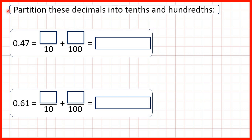We need to partition these decimals into tenths and hundredths, showing the partition as both fractions and decimals. So first we have 0.47. We know that the first digit after the decimal point tells us how many tenths we have, so that's four tenths. And then the second digit after the decimal point tells us how many hundredths we have, so we have seven hundredths.